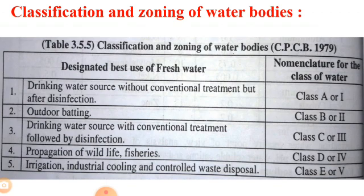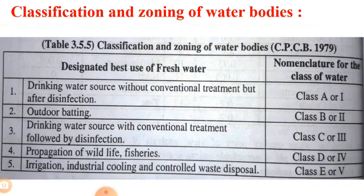The classification of water bodies by designated best use is shown in a chart. Class A is drinking water sources without conventional treatment but after disinfection. Class B is outdoor bathing water. Class C is drinking water sources with conventional treatment followed by disinfection.